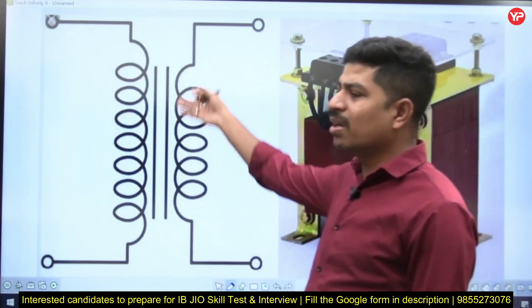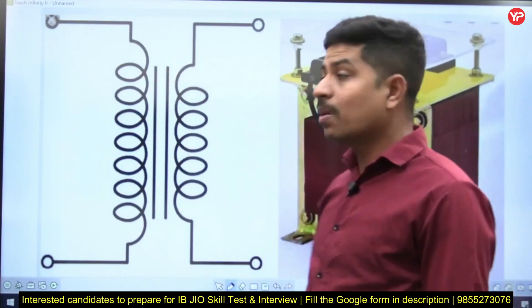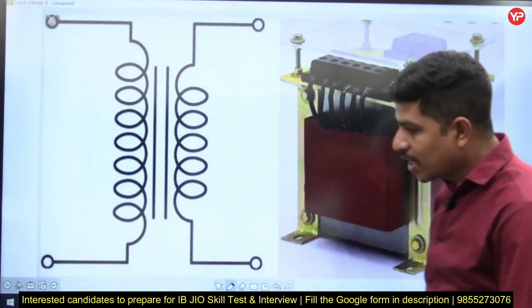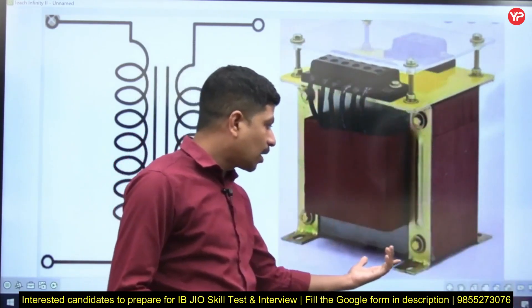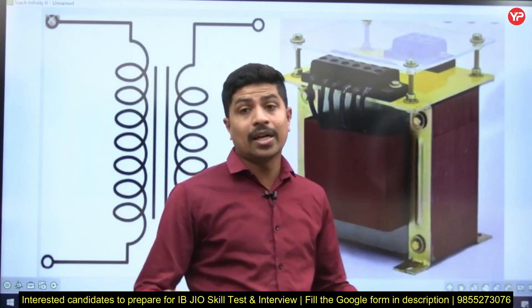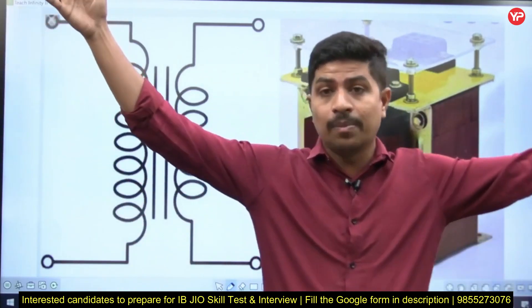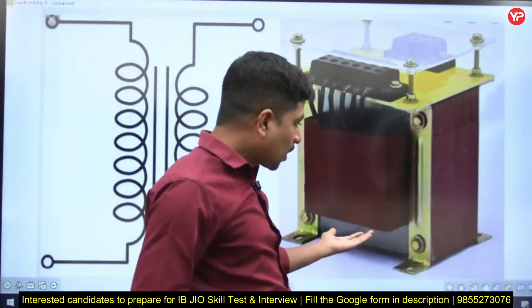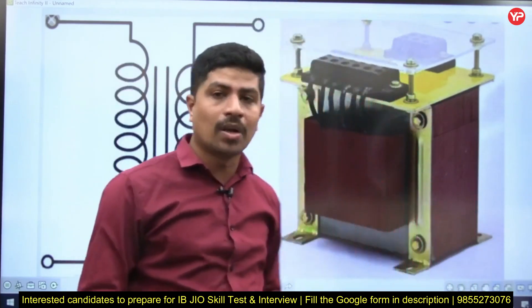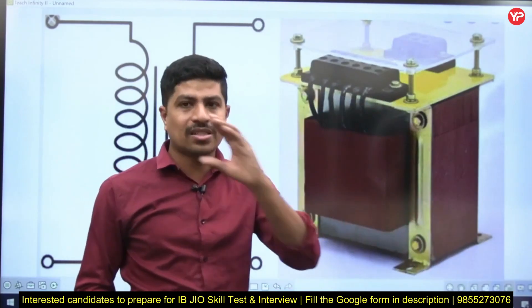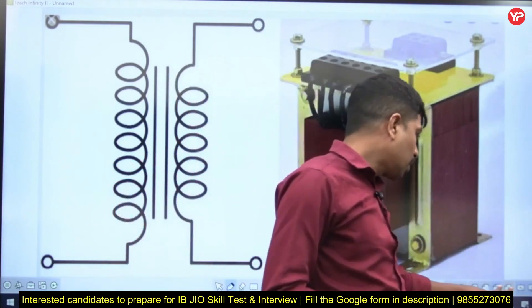Now, this is a transformer. This is the symbol used to represent a transformer, and this is a practical transformer. In the electronic laboratory, you find small transformers. The electrical transformer is generally very big. In power electronics lab or networks lab, if you want a 1:1 transformer, it may come in a small structure like this.